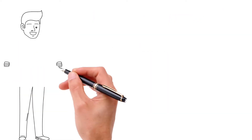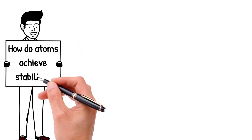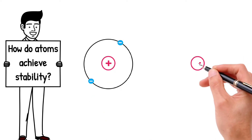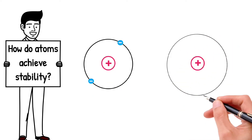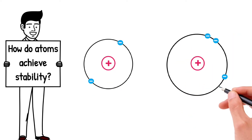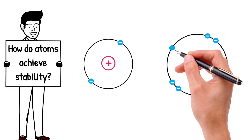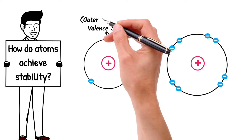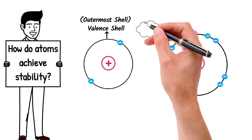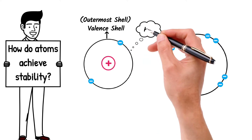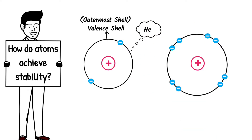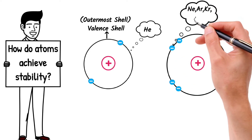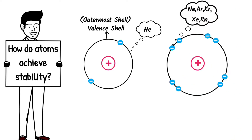So how do atoms achieve stability? Having two or eight electrons in the valence shell is a sign of stability. Noble gases do have two or eight electrons in their valence shells. Valence means the outermost shell of an atom. Like helium has two electrons in its valence shell, because the first shell can accommodate only two electrons, while all other noble gases have eight electrons in their valence shell.